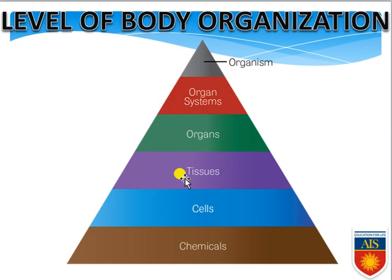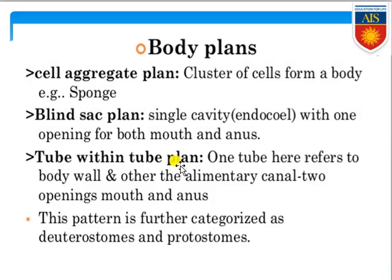So based on level of body organization, we categorize organisms into four categories: cellular level, tissue level, organ level, and organ system level of body organization. Now we move to the next feature, which is body plan.